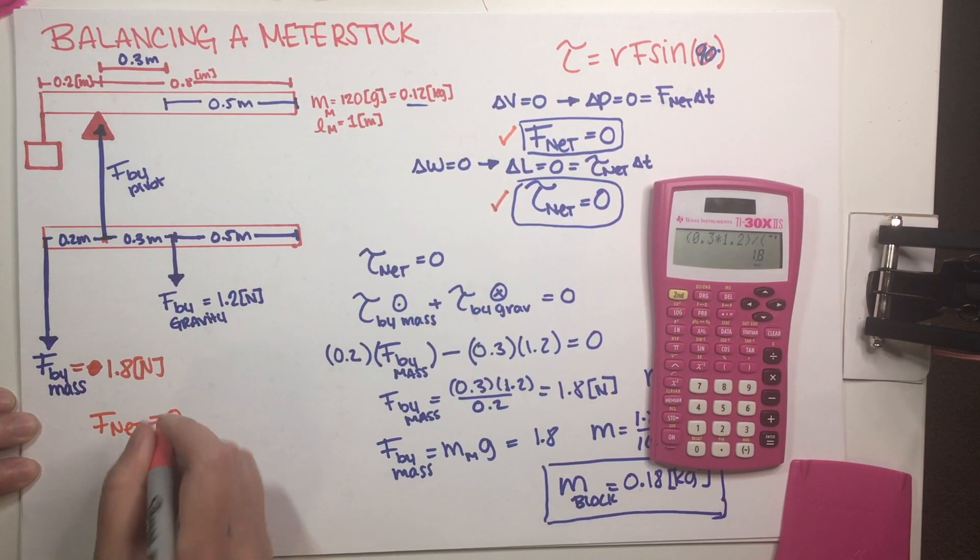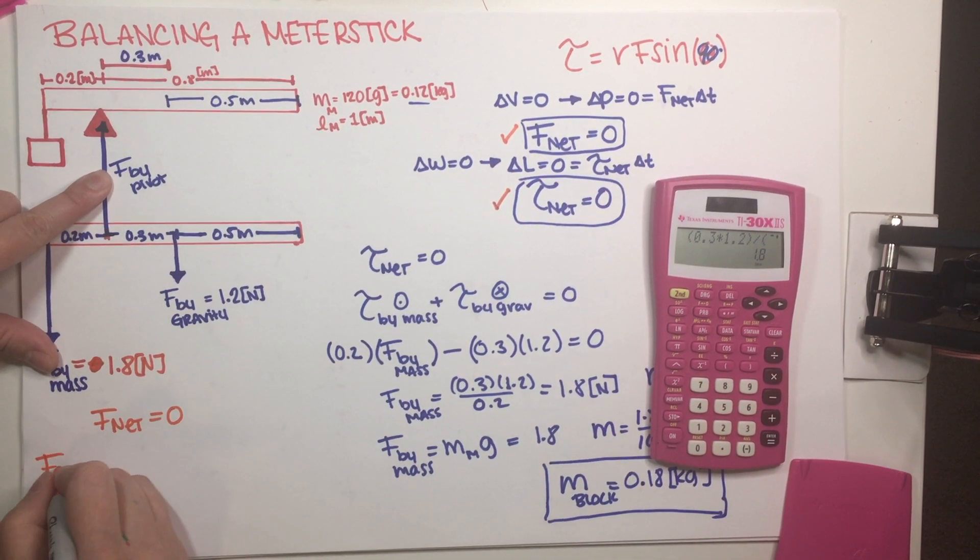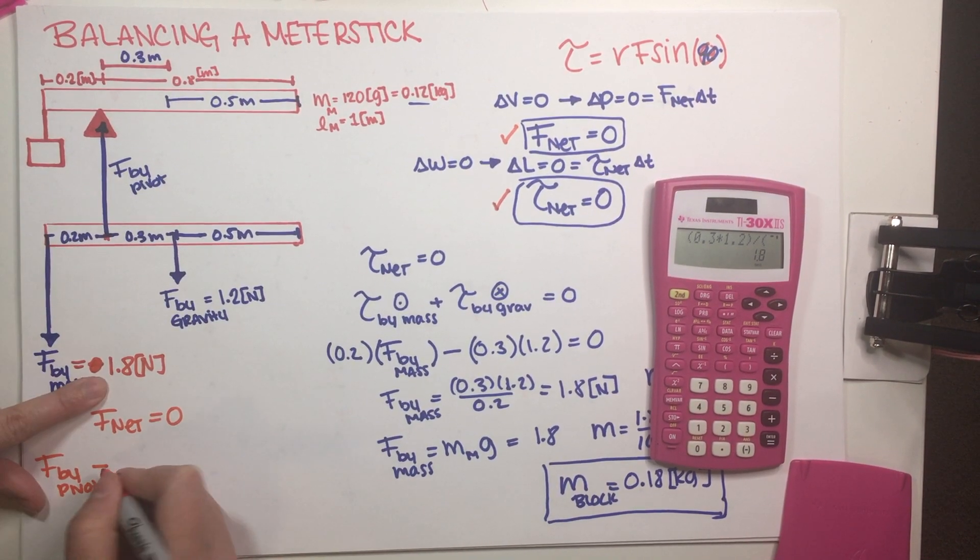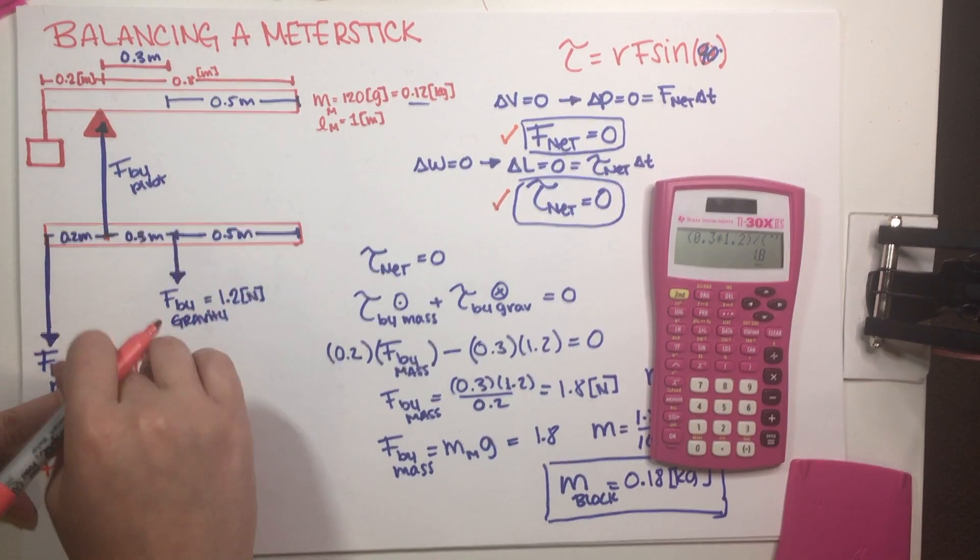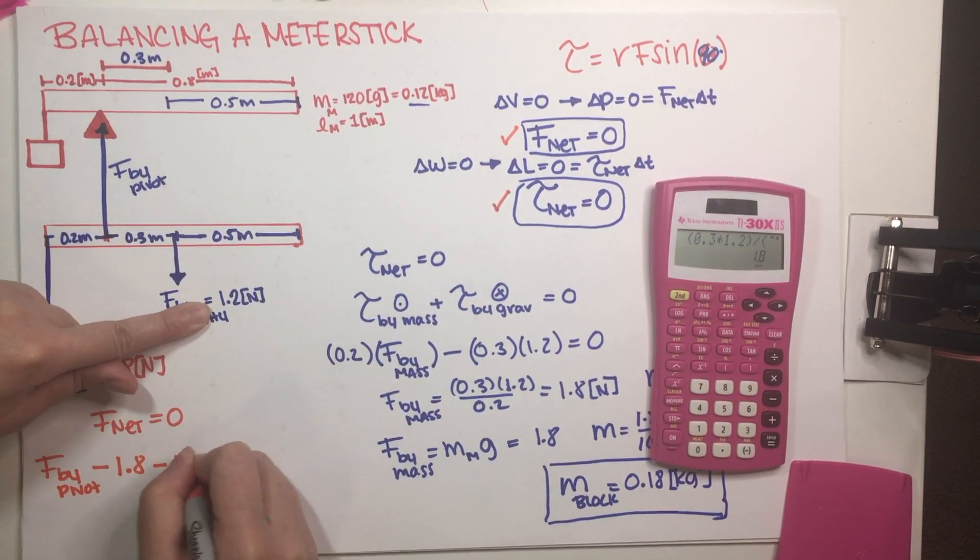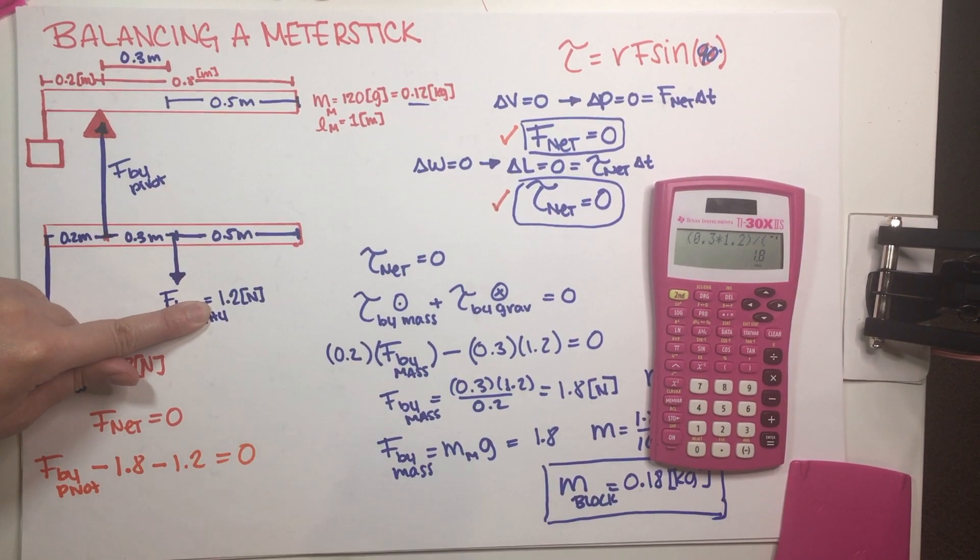The net force has to be equal to 0, which means that a force going up minus this force going down, remember, different signs, because we have different directions, minus this force going down, has to be equal to 0.